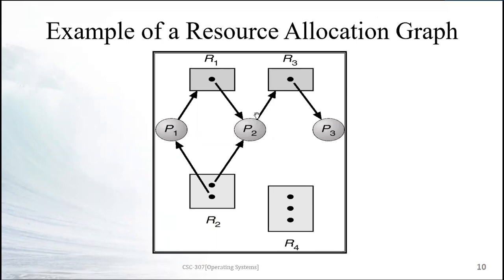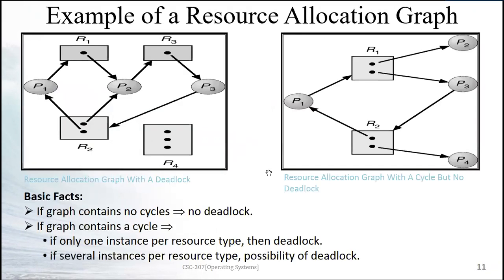With the resource allocation graph, we try to detect whether there is any cycle. If there is no cycle, we can be sure there is no deadlock. A cycle means, for example, P1 is waiting for R1, R1 is held by P2, P2 is waiting for R2, and so on — one node connected to another in a loop.